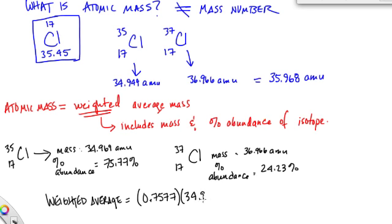And then we add that to the percent abundance in a decimal, which is 0.2423, that's 24% of the mass of the other isotope. So we multiply it by the mass of chlorine-17, which is 36.966.